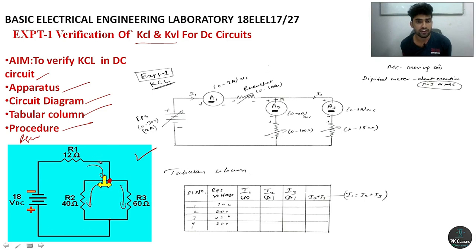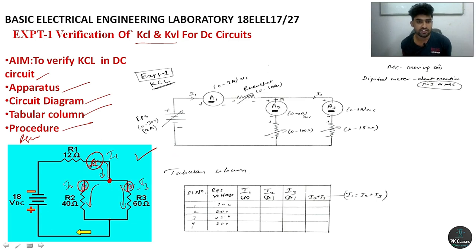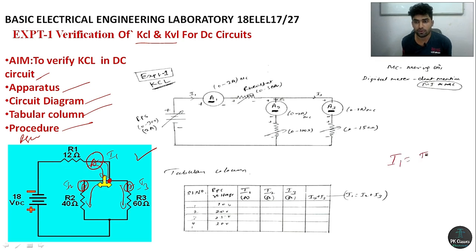Here, current is flowing and then dividing into two branches. I will be connecting an ammeter to measure I1, I2, and I3. This ammeter measures the total current, and the other two ammeters measure each branch current. Whatever ammeter one reads, it is equal to the sum of the other two ammeter readings. So I1 is equal to I2 plus I3 — I1 is entering the junction, and I2 and I3 are leaving from the junction.